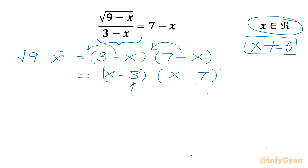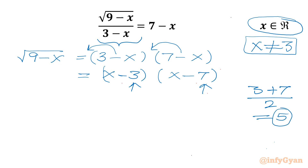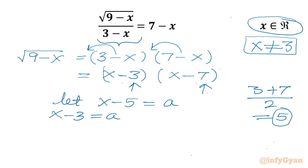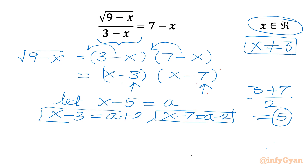On the right hand side we have two numbers, 3 and 7. We take their average mean value, which is 5. So our substitution is x minus 5 equal to a. Then x minus 3 becomes a plus 2, and x minus 7 becomes a minus 2. These are the two values for our RHS.